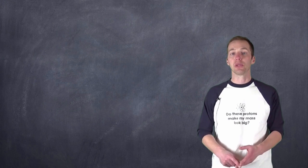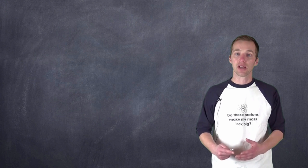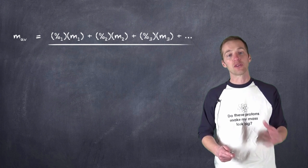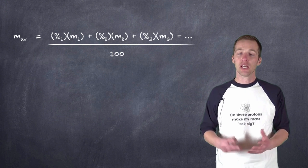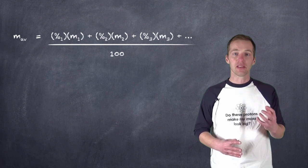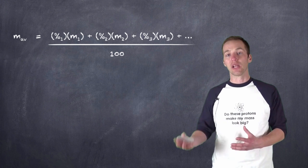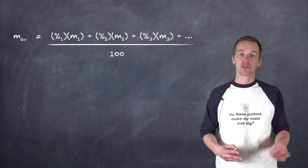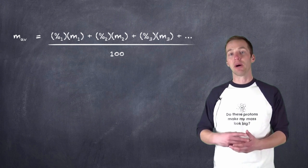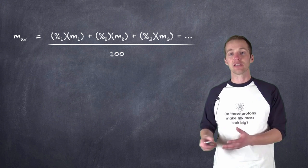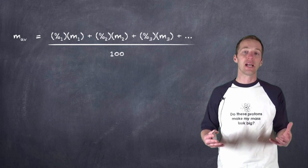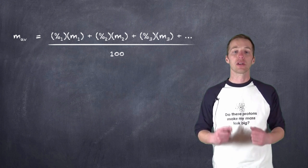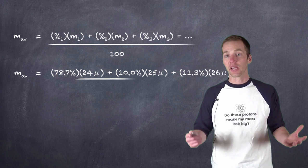Now, how do we use this to establish these values that we see on the periodic table? Well, again, we have to go back to our weighted average calculation. And the way that we go about figuring this is to take the mass, and multiply it by its relative abundance, or its percentage, and add it to the next mass multiplied by its relative abundance of the next isotope, and so on and so on, until all of the naturally occurring isotopes are considered.